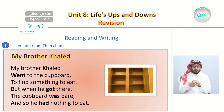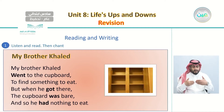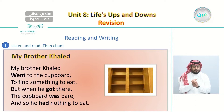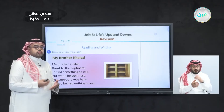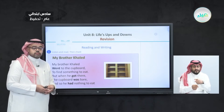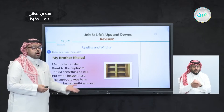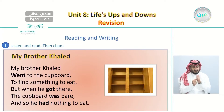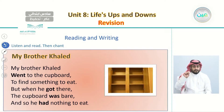My Brother Khalid: My Brother Khalid went to the cupboard to find something to eat. But when he got there, the cupboard was bare, and so he had nothing to eat. From this part, I ask you to find the irregular verbs used in the past. Here we have four verbs in the past: went, got, was, and had.